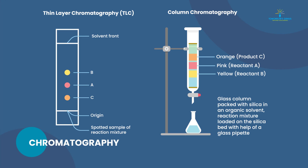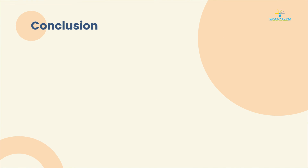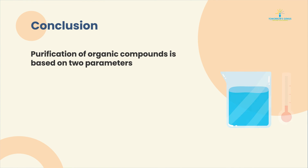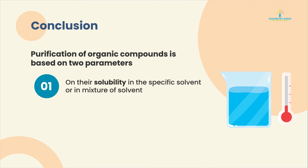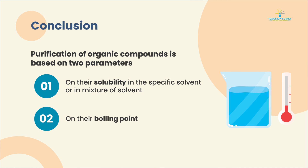In the end, we can conclude that purification of organic compounds is based on two parameters: first, their solubility in a specific solvent or in a mixture of solvents, and second, their boiling point.